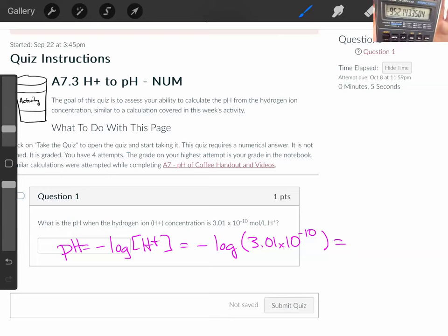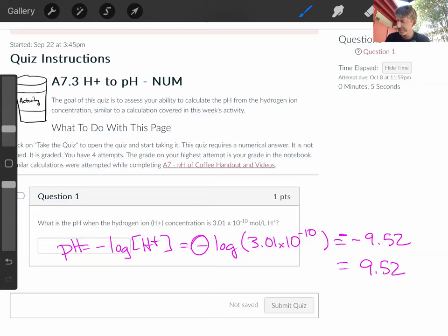And if I do, I get minus 9.52. Nope. Then there's another minus right here. So a minus and a minus equals a plus. And my final answer for the pH for this is pH equals 9.52.